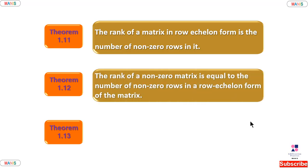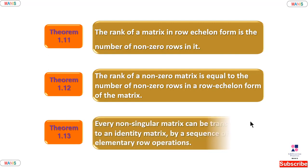Any non-zero matrix, using equivalent transformations and elementary transformations, can be converted into row echelon form. The third theorem states that every non-singular matrix can be transformed into an identity matrix by a sequence of elementary row operations. This defines a non-singular matrix.